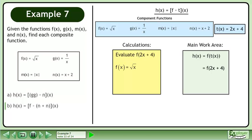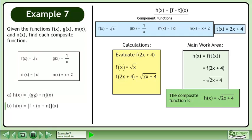We know that f equals the square root of x. So f equals the square root of 2x plus 4. The composite function is h equals the square root of 2x plus 4.